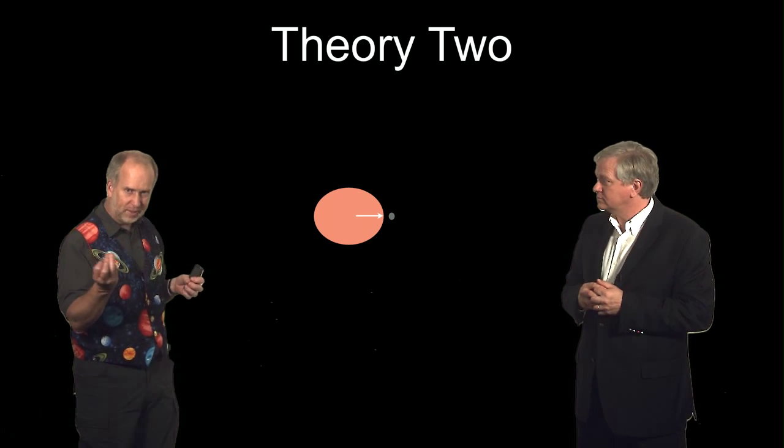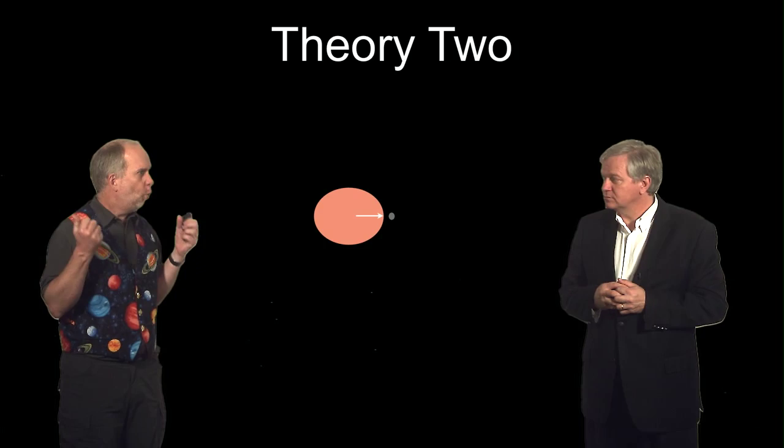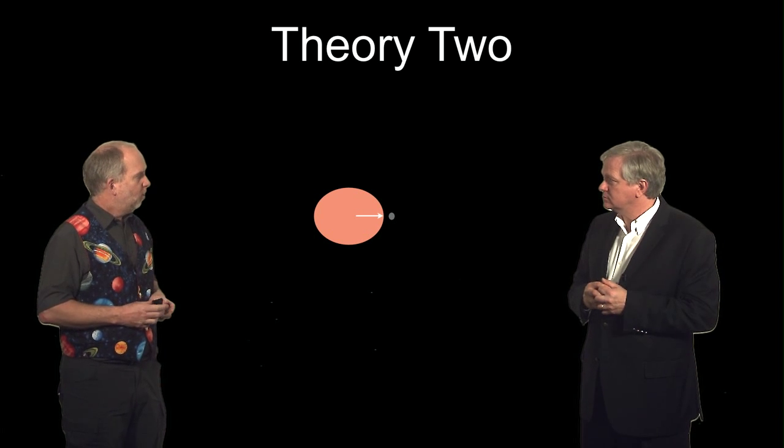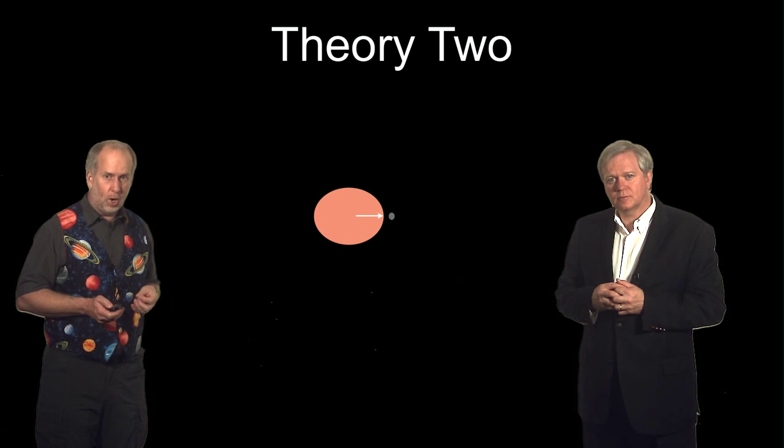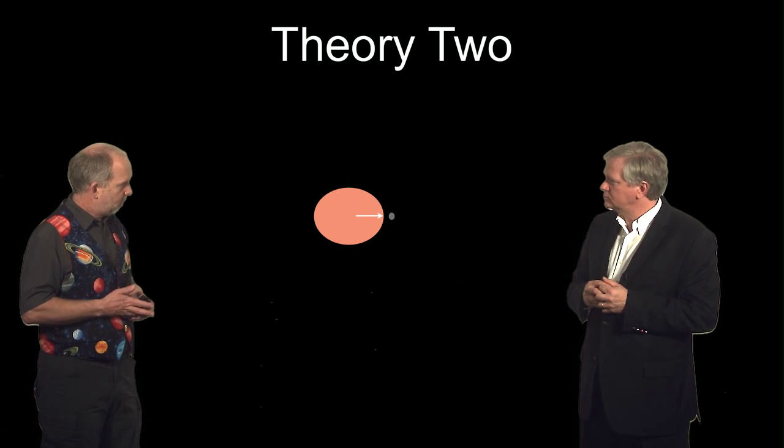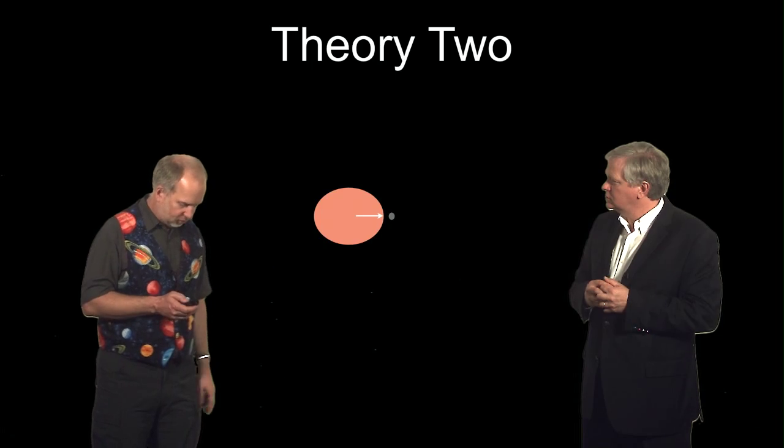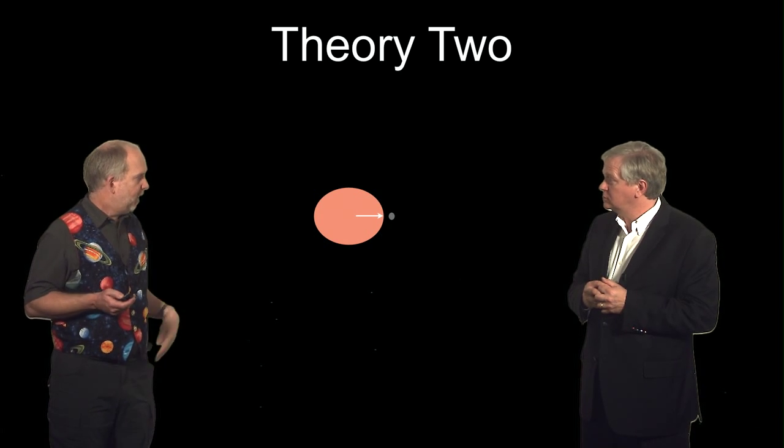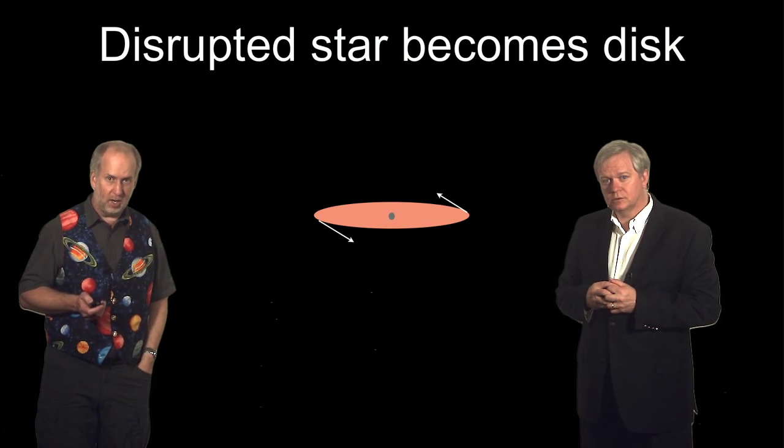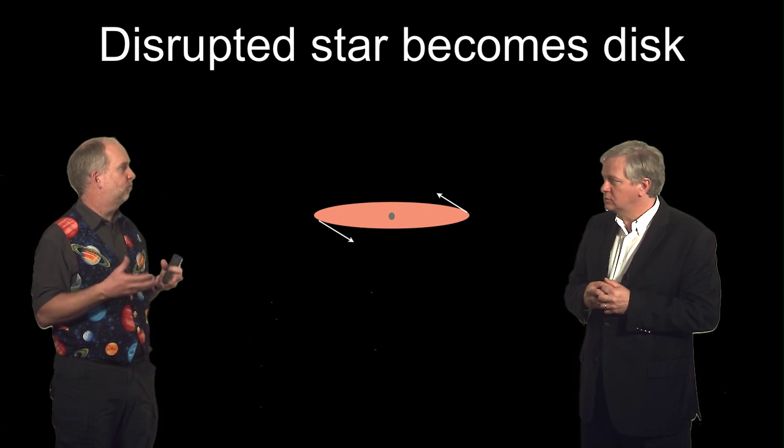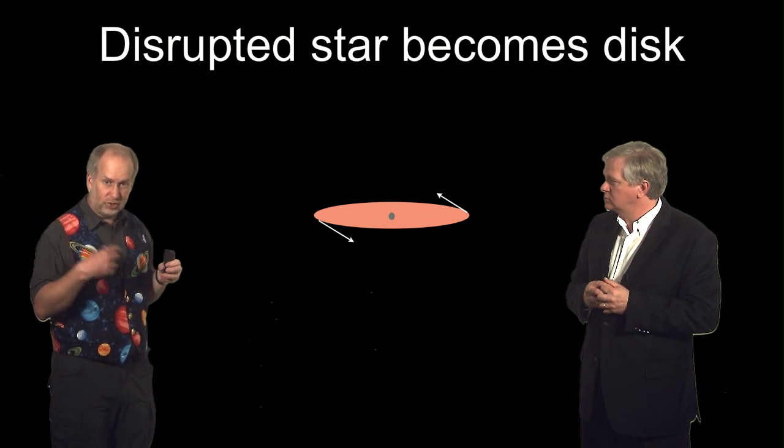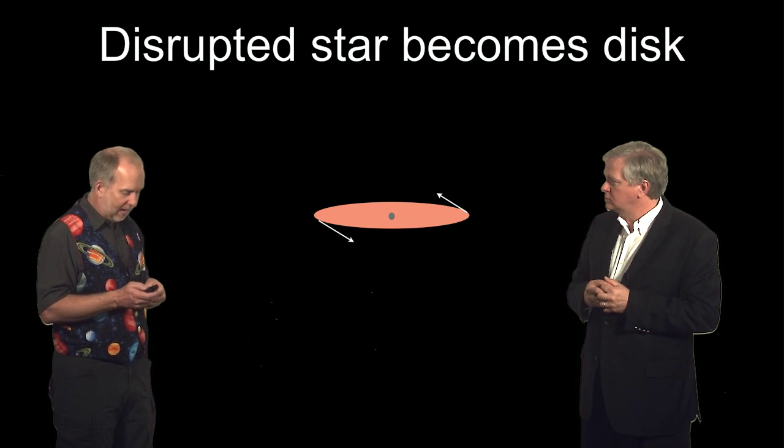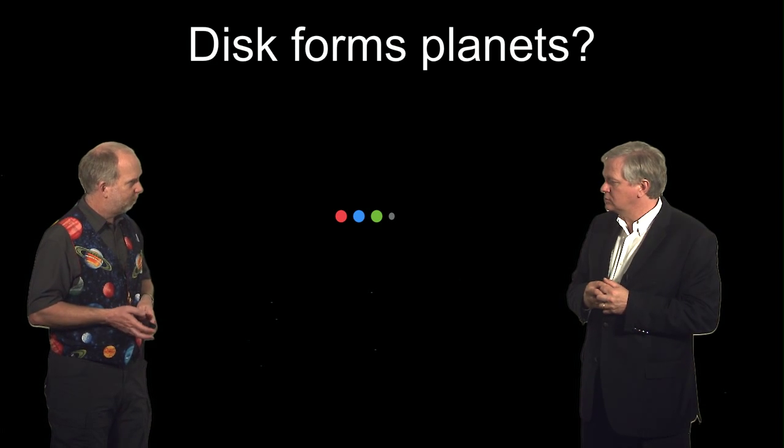So maybe we can kill two birds with one stone. We've got problem number one, where are these planets from? And problem number two, where has the second star gone? So possibly we can combine these in some way. One possibility is that we need to get rid of the second star. Maybe it feeds matter onto the neutron star and it somehow gets torn to pieces or disrupted. And so some of the mass ends up at the neutron star, but some ends up in a spinning disk. And out of the spinning disk, planets form.